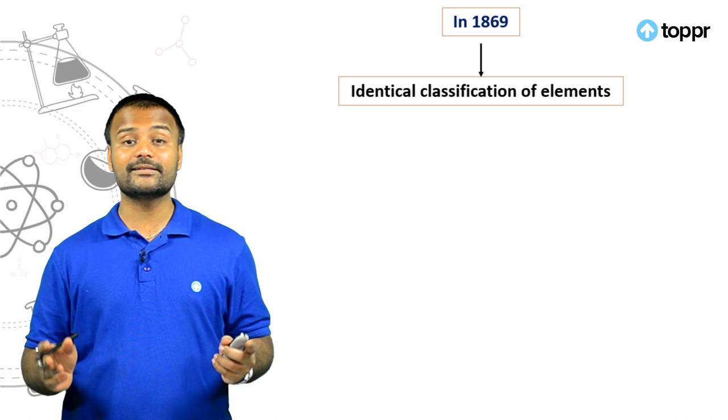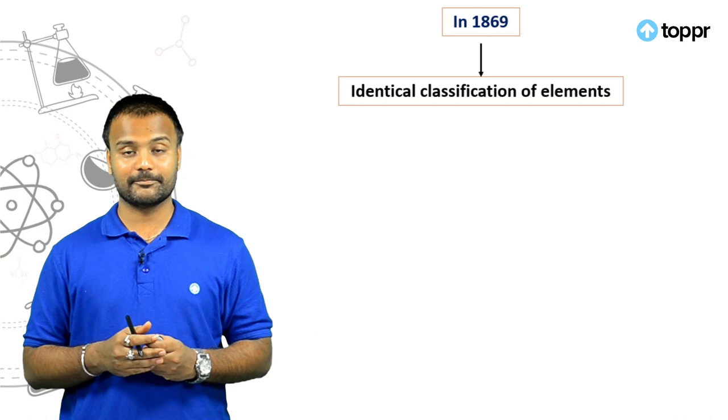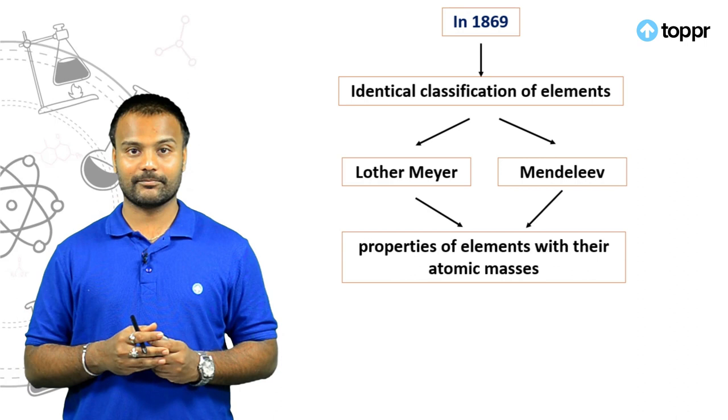In 1869, two scientists—a German scientist and a Russian scientist—worked independently and came up with identical classifications of elements. Lother-Meyer, a German scientist, and Mendeleev, a Russian scientist, both worked on periodic properties of elements with their atomic masses.